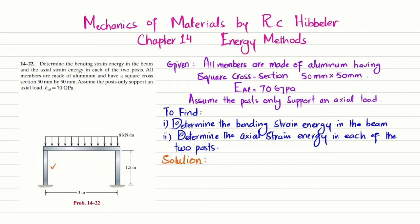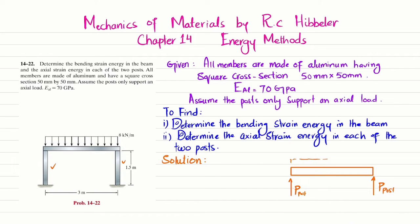If we remove the two posts, each will apply a vertical reaction on this beam. The load that each post applies on the beam is P_post. Similarly, on the other side, the same-length, same-material post applies a load P_post on this beam. There is also a uniformly distributed load of 8 kN per meter acting downward on the beam.